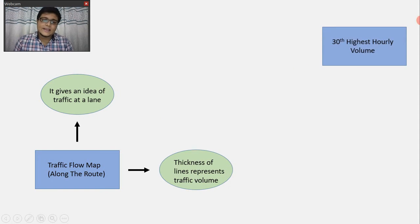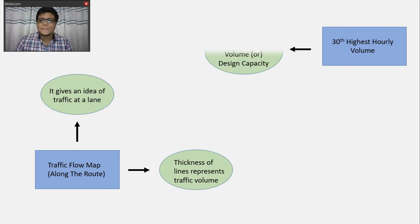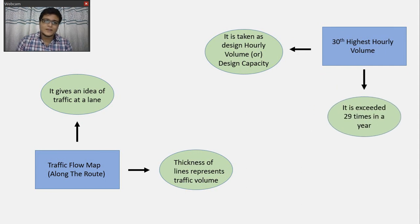A very important concept is the 30th highest hourly volume. Based on this 30th highest hourly volume, we design the traffic. It is taken as the design hourly volume or design capacity, and it is exceeded only 29 times in a year.